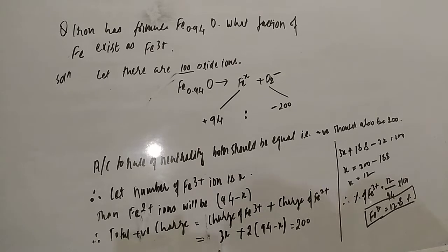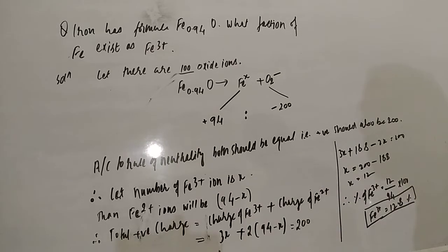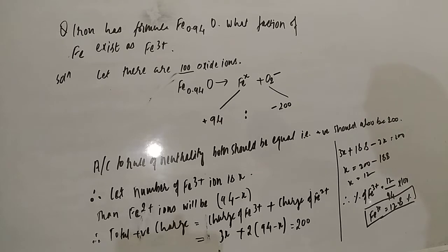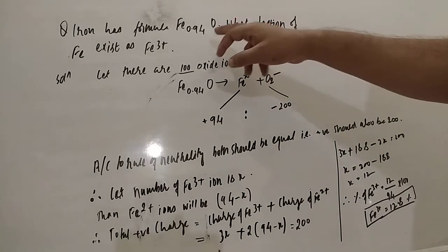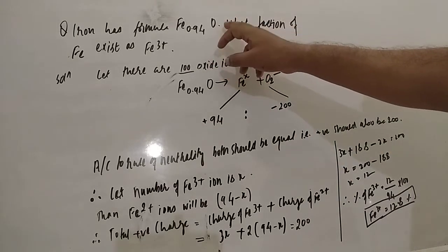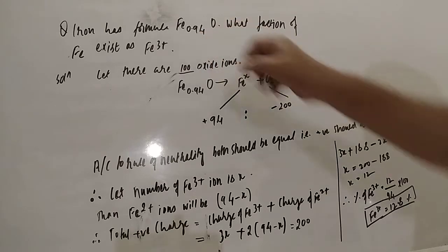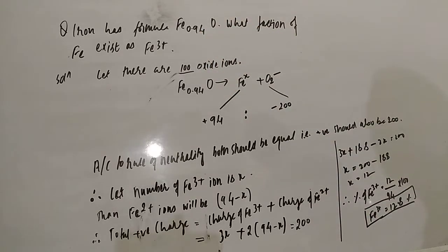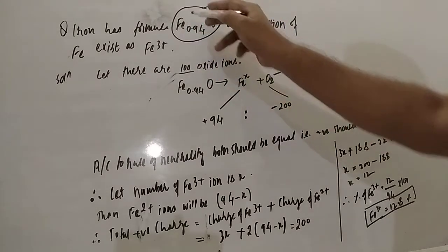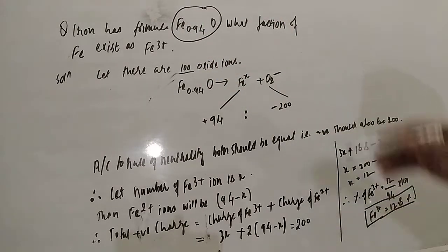Hello students, let us see a problem based on the impurity defect. The problem states that iron has the formula Fe₀.₉₄O. What fraction of Fe exists as Fe³⁺ iron? Try to understand this.